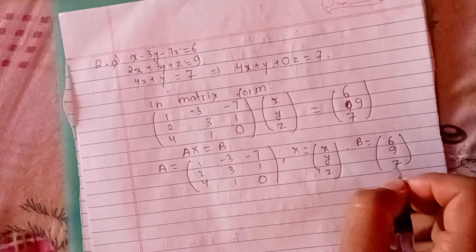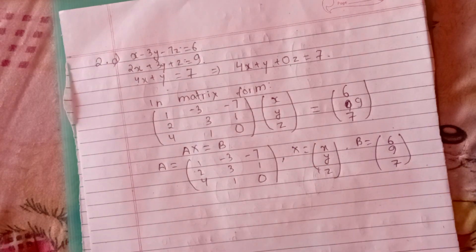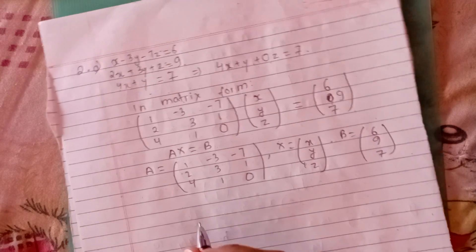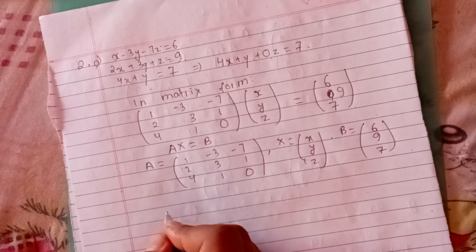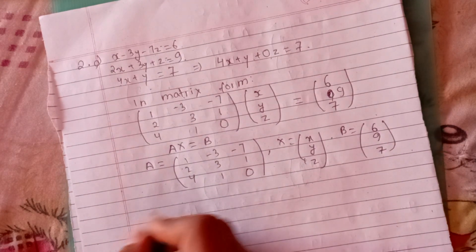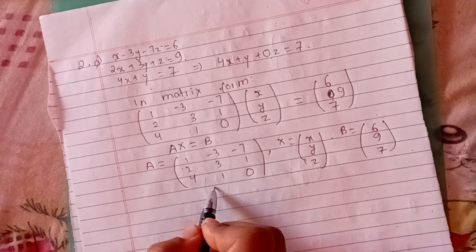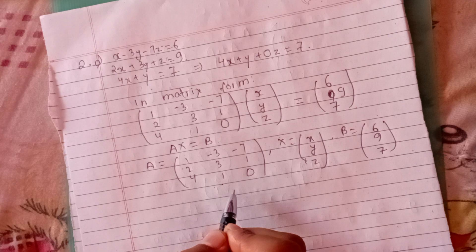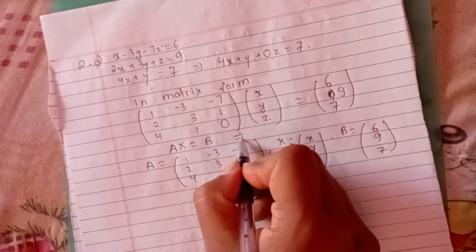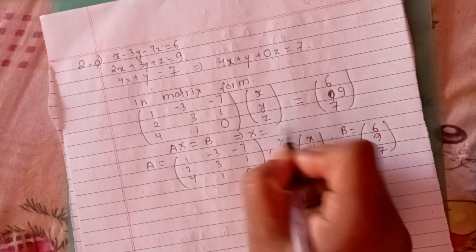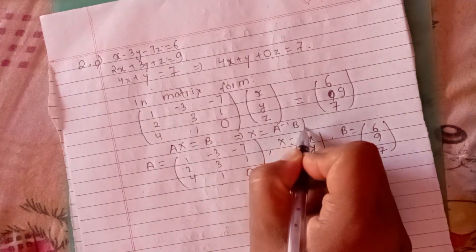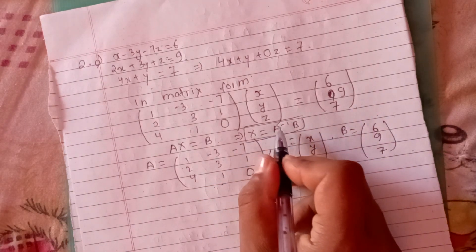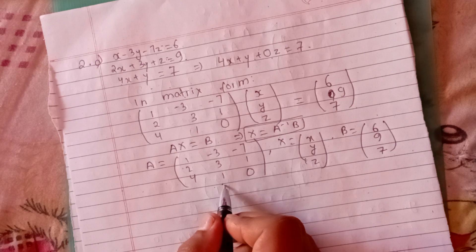So we have the matrix formula. The solution is x equals A inverse times B. We need to find the inverse of A, and x equals the variable vector x, y, z.